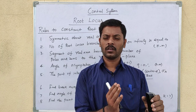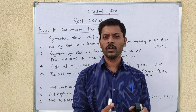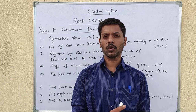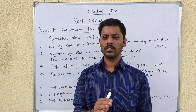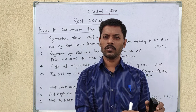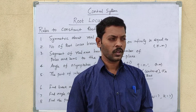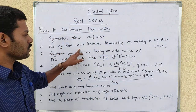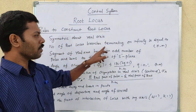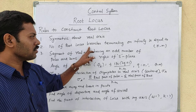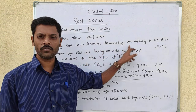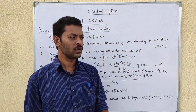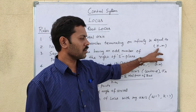Suppose there are two poles and one zero. Then one branch terminates at the zero, and we look at infinity. The number of root locus branches terminating at infinity is n minus m, where n is the number of poles and m is the number of zeros.